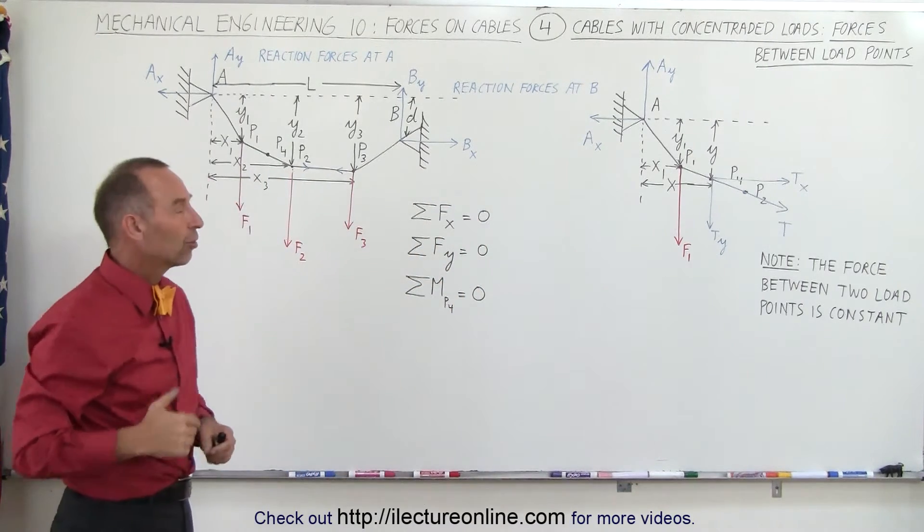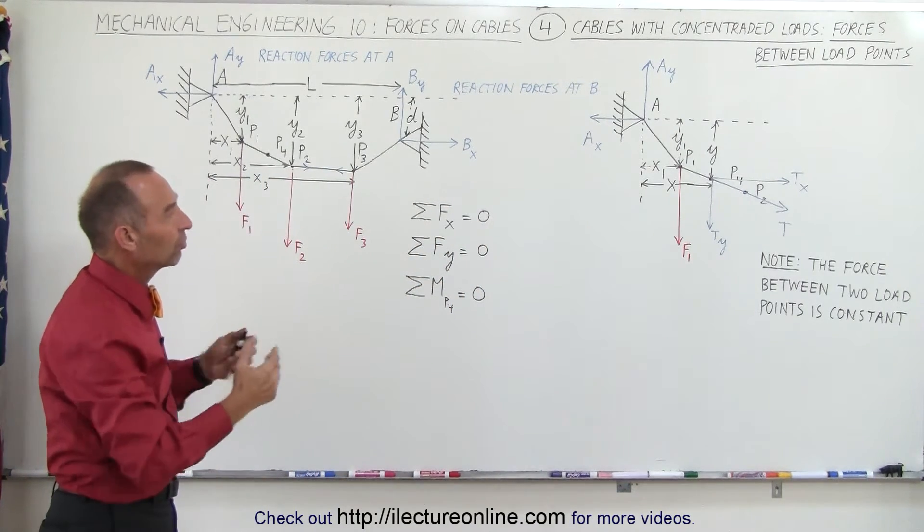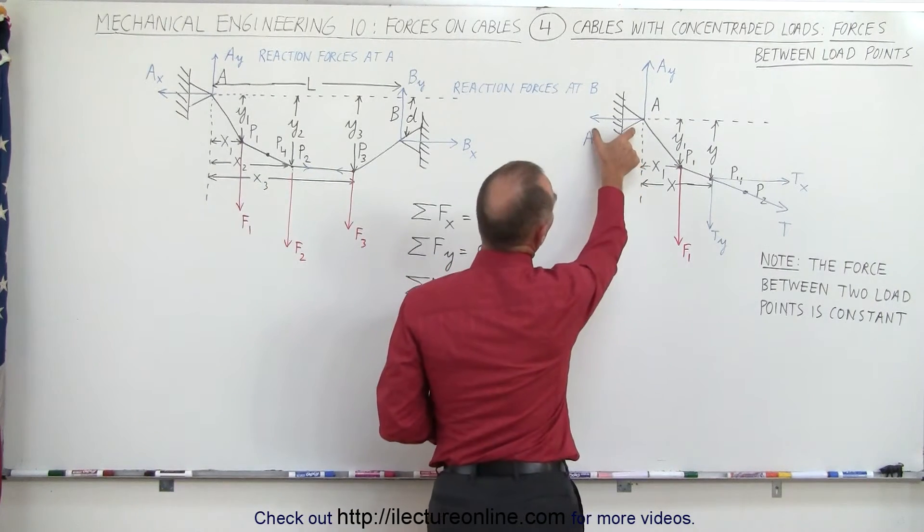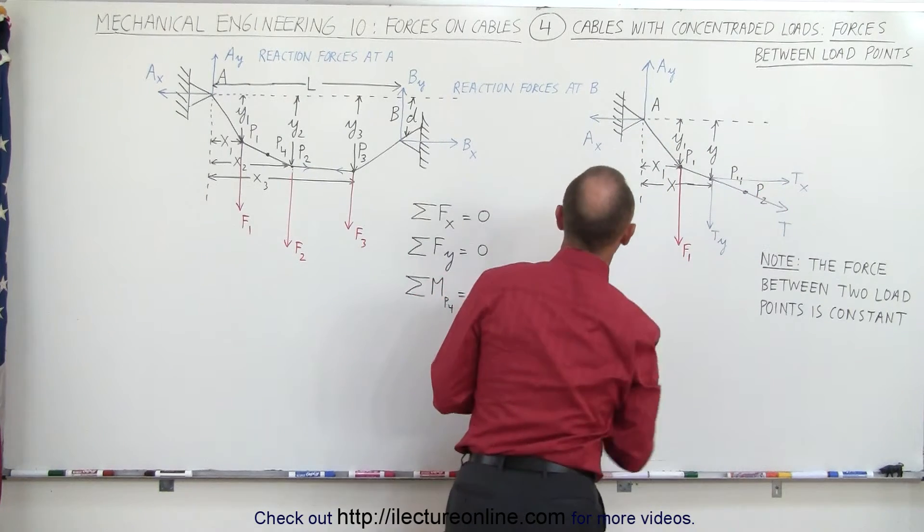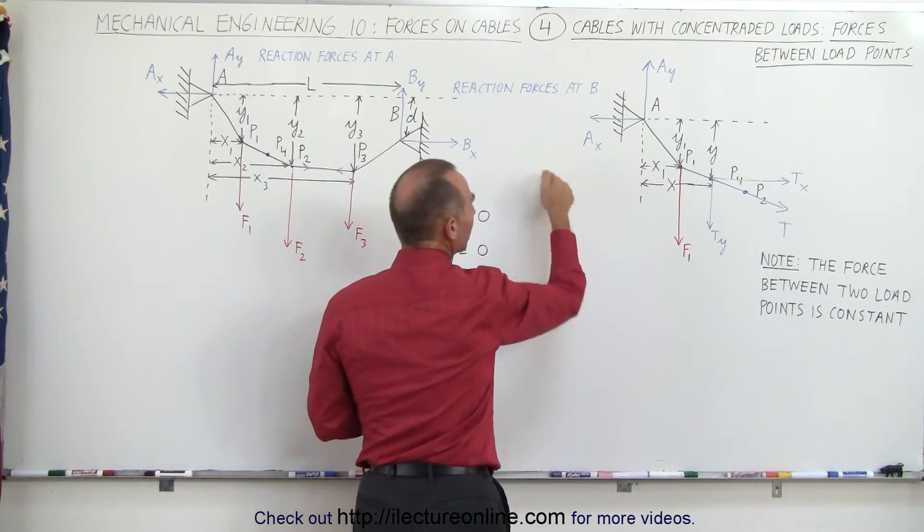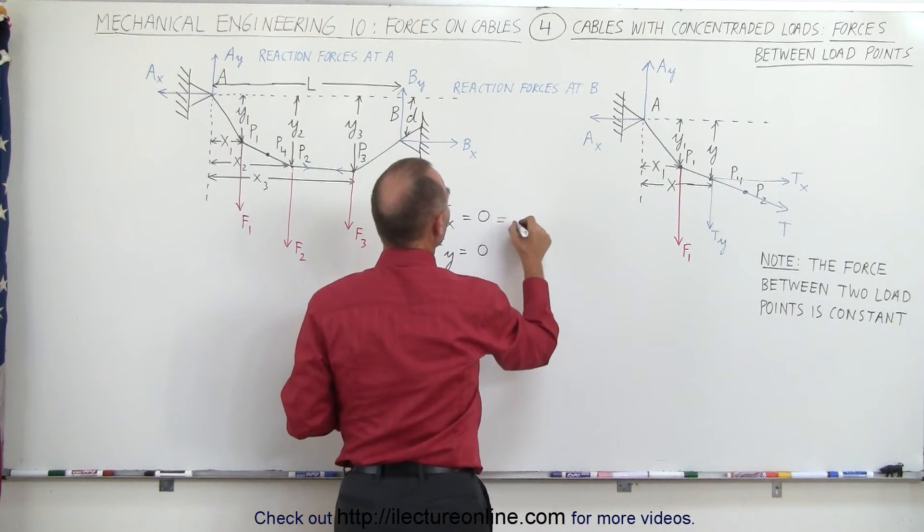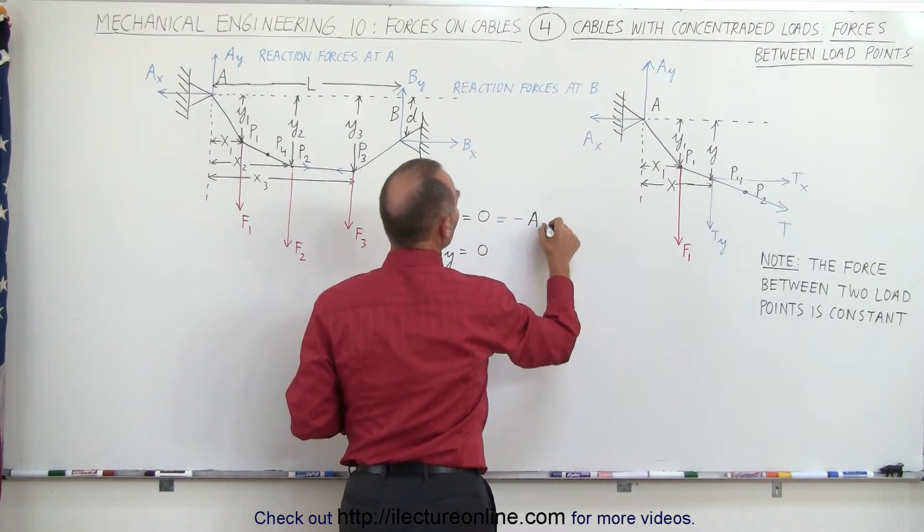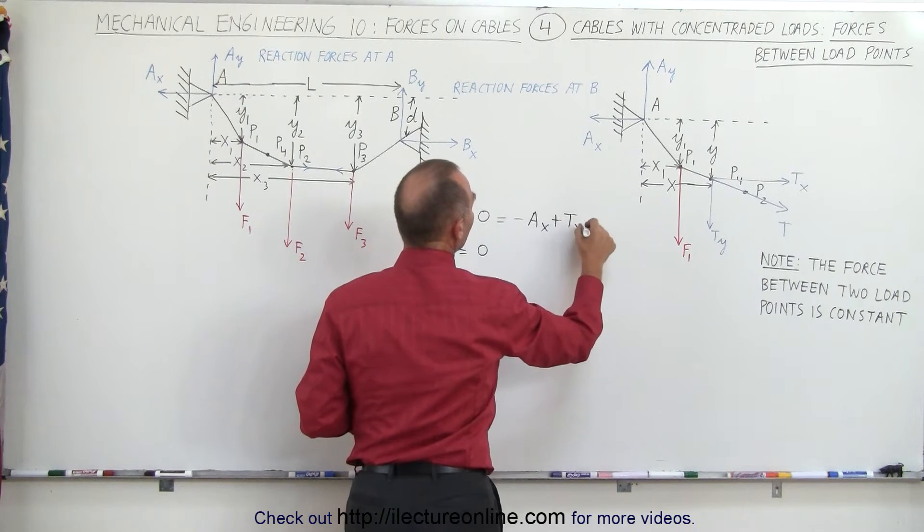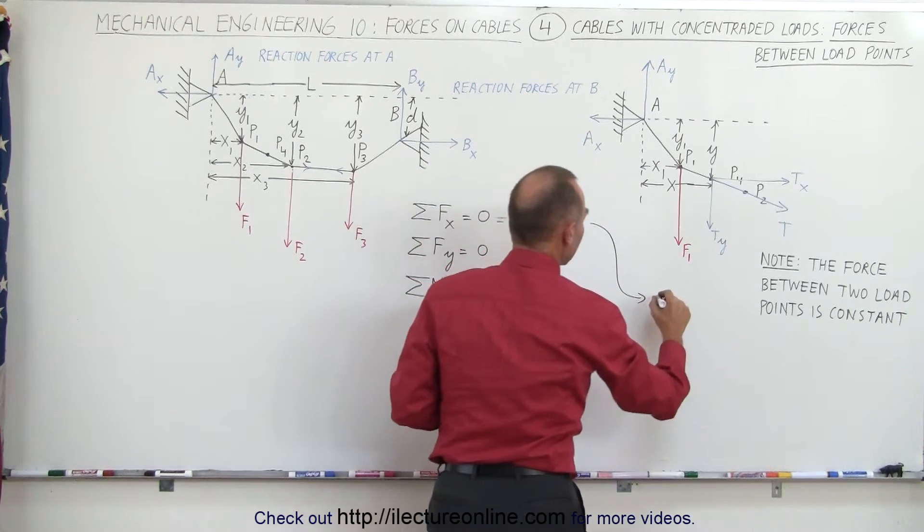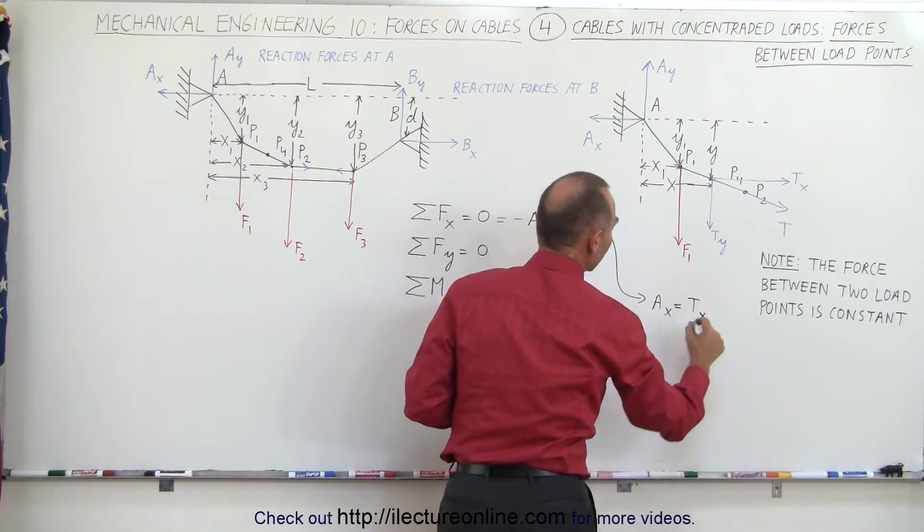So let's find the sum of the forces in the x direction in a situation like this. All the forces in the x direction, you can see that we have an A sub x here and we have a T sub x. A sub x is pointing in the negative direction, T sub x is pointing in the positive direction, so we can say that minus A sub x plus T sub x must add up to zero, and from that we can conclude that A sub x must equal T sub x.